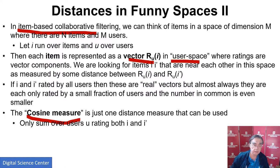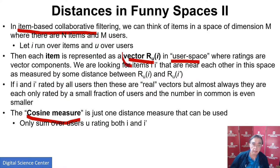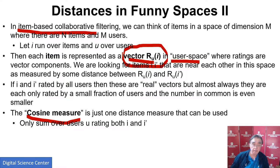We can also do the opposite, which is item-based collaborative filtering: thinking of the items in the space of users. A given item rated by a thousand users has a vector with a thousand entries — the ratings for those users. Here we use the cosine measure, which is a traditional distance measure that tells you how far items are apart. If a viewer watches a movie, and you calculate the distance using only the points in common where both ratings are defined, then points in the space with similar ratings — which is what the cosine measure captures — are likely to be useful to view.